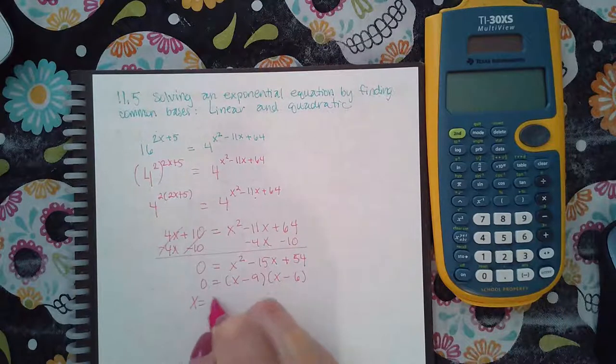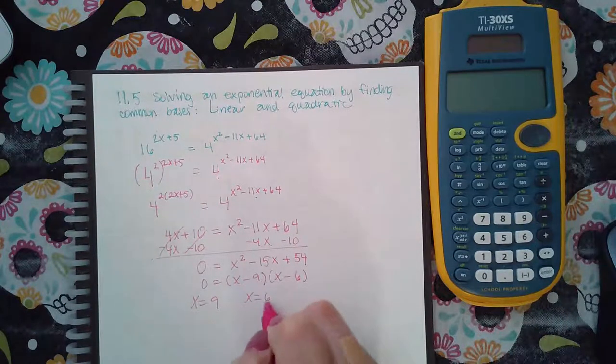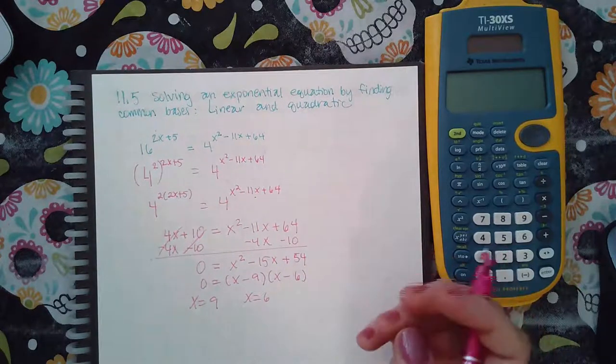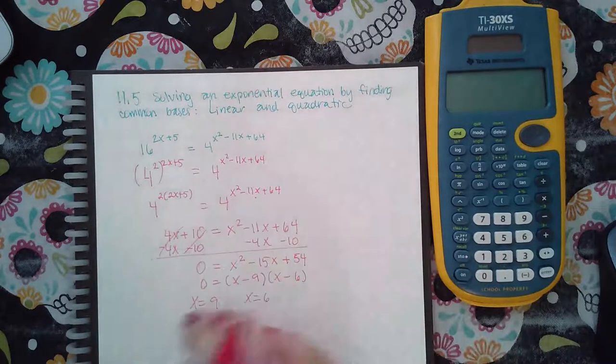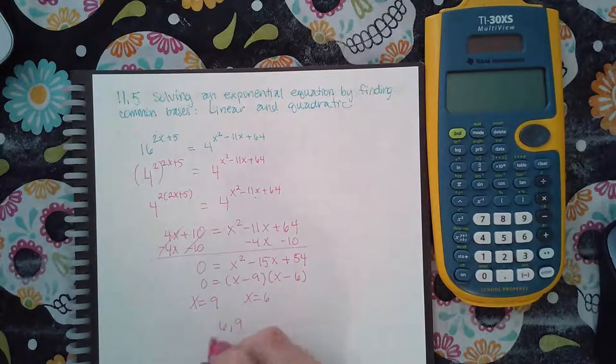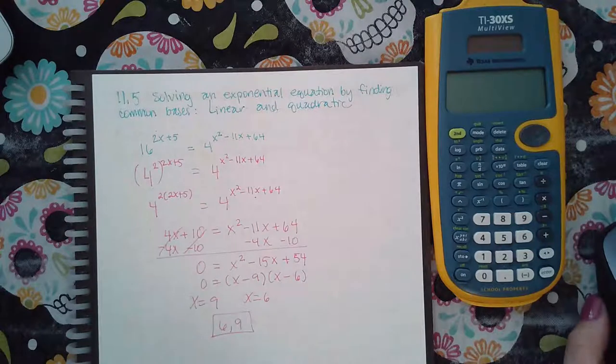So then I get x equal to positive 9 and x equal to positive 6. Now I just have to check. I don't even have to check both answers because I don't have the variables in the bases and there's no arguments in this problem. So I do end up with two solutions, which are 6 and 9.